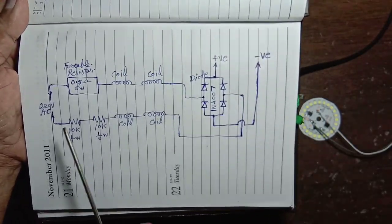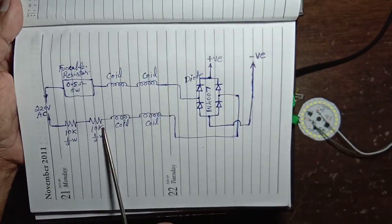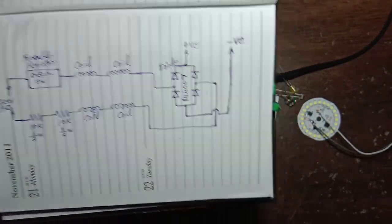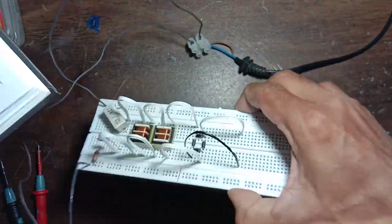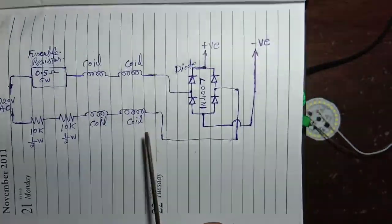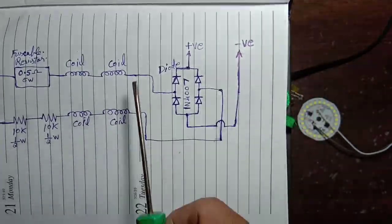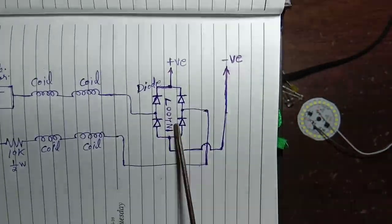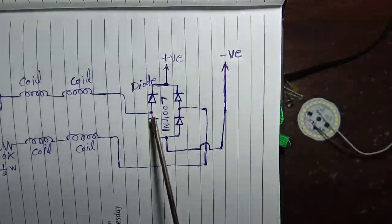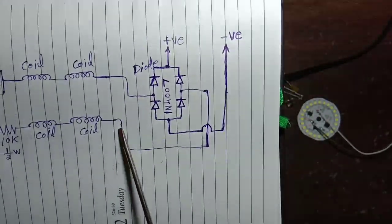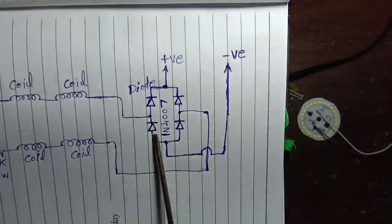The 210K half watt resistors are in series. Then there are two coils given in series. After that, both coil connections go to a bridge rectifier — this is a 1N4007 diode; four diodes make the bridge rectifier.